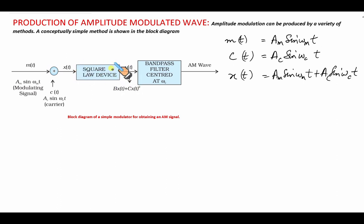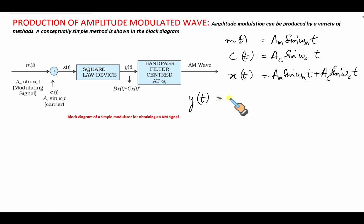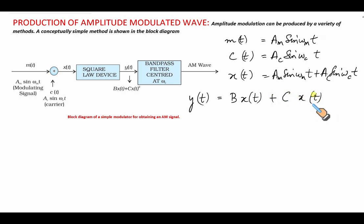This signal x(t) is passed through a non-linear square law device which produces an output y(t). y(t) = b·x(t) + c·[x(t)]², where b and c are constants. This is the block diagram of a simple modulator for obtaining an amplitude modulated signal.